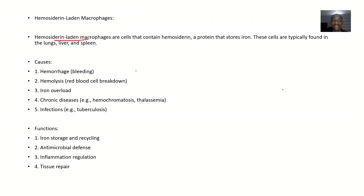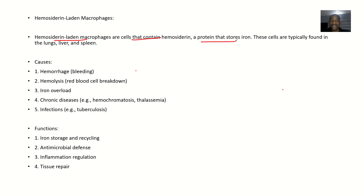For the definition, hemosiderin-laden macrophages are a type of cells that contain hemosiderin. What is hemosiderin? From the topic of iron overload in the body, hemosiderin is a protein that stores iron. These cells are typically found in organs like the lungs, the liver, and the spleen.